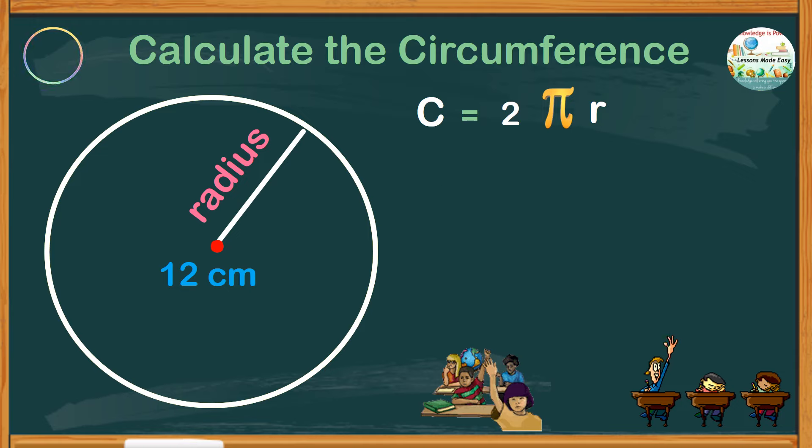Just substitute the values. We have C equals 2 times the value of pi, which is 3.14, times the given radius of 12 cm.